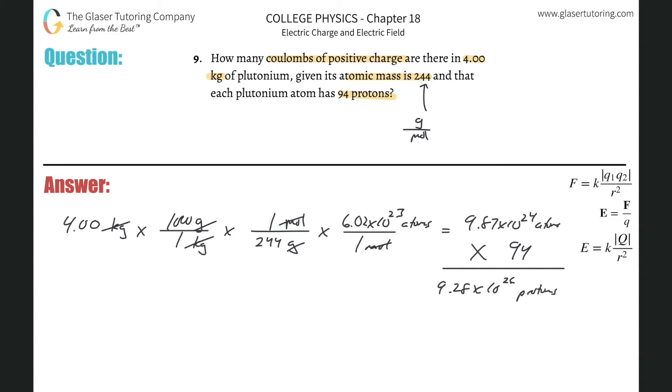And they want us to find how many coulombs of positive charge there are if we have 9.28 times 10 to the 26th protons. So now we do another conversion. This whole problem could have just been a strung along conversion problem, but I decided to break it up here in the end a little bit.